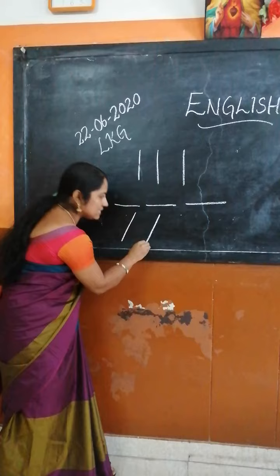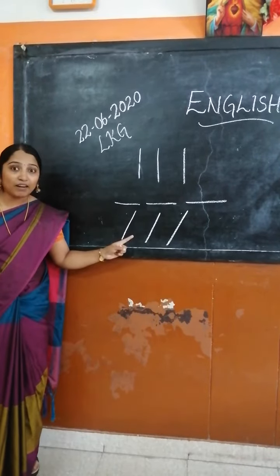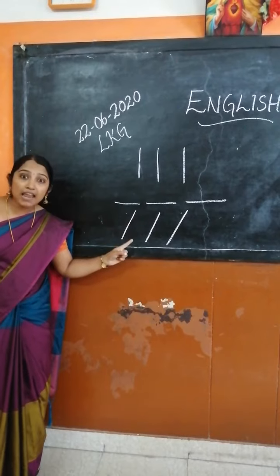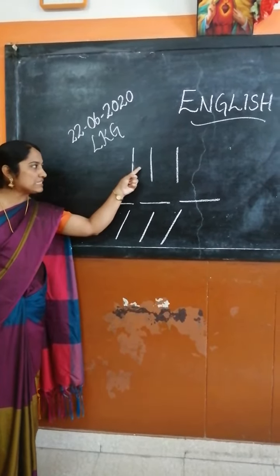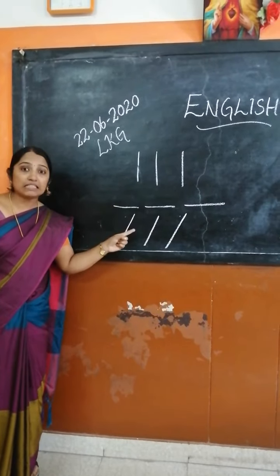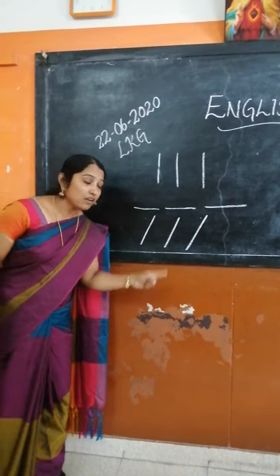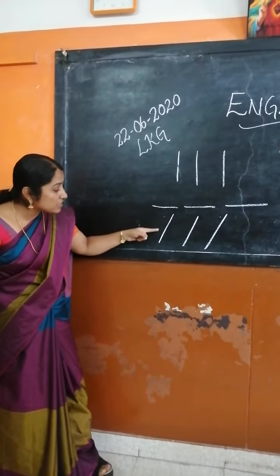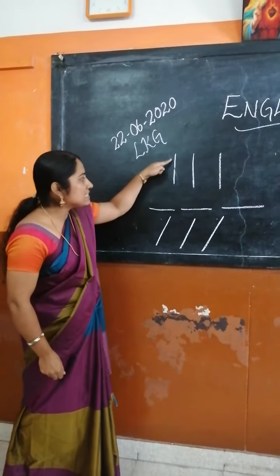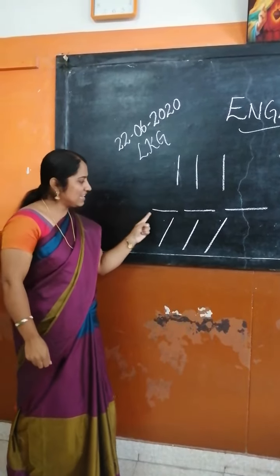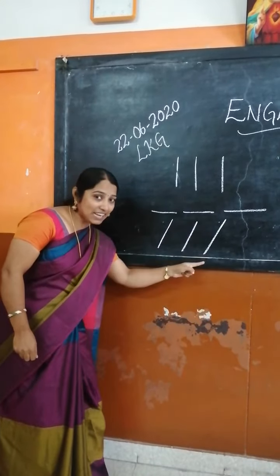That is the third one — the slanting line. What happened to our standing line now? Oh, that standing line is going to fall down. This line is called slanting line. So we have: standing line, sleeping line, and slanting line.